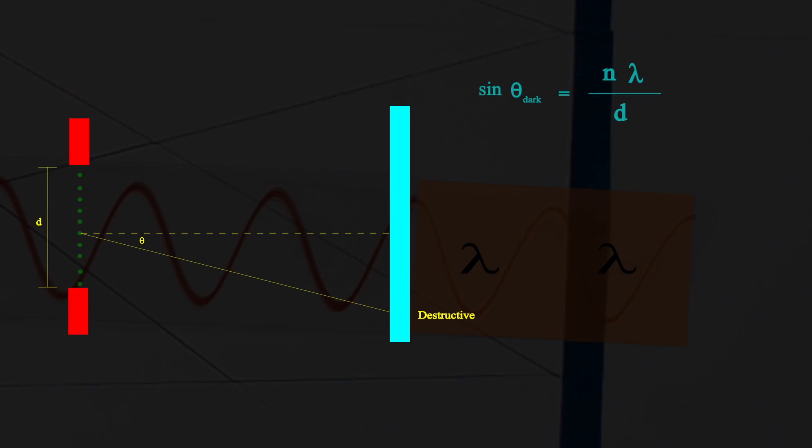In this formula, theta is the angle of diffraction. Lambda is the wavelength of light, while d is the width of slit or thickness of the wire.